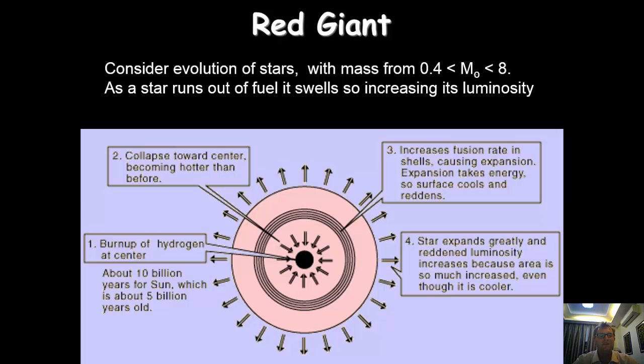How this happens is we have the burn up of hydrogen at the center. That means there's a collapse towards the center, so that becomes hotter than before. This in turn increases the fusion rate in the shells outside, and that causes them to expand. But this expansion at the same time spreads the heat out and causes the surface to cool. So the star expands greatly and the luminosity increases because the area is even more increased, even though it's cooler. This is what's going to happen to our sun at some stage.